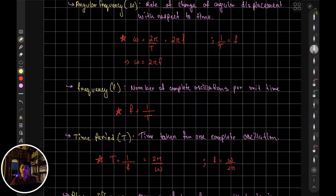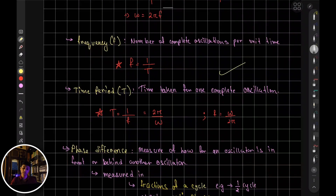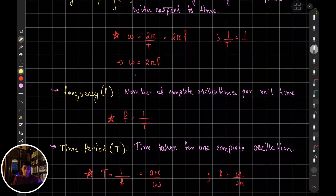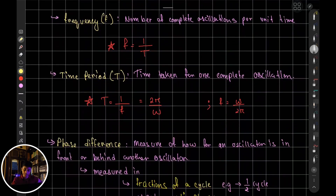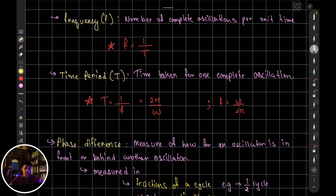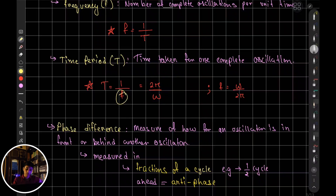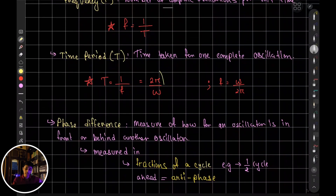Frequency is the number of complete oscillations per unit time. Time period is the time taken for one complete oscillation. You can express time period as 1/f or as 2π/ω. This is derived by rearranging omega = 2πf to get f = ω/2π, then taking the reciprocal to get T = 2π/ω.